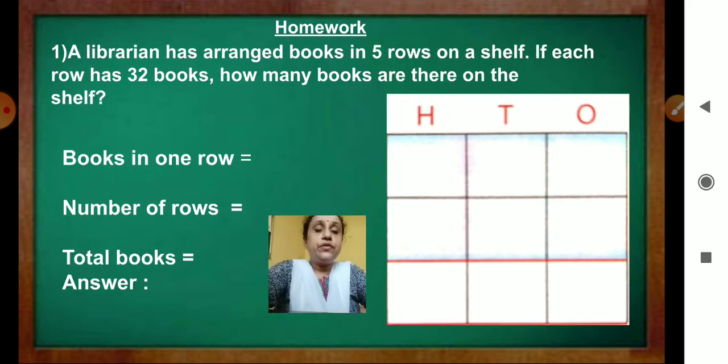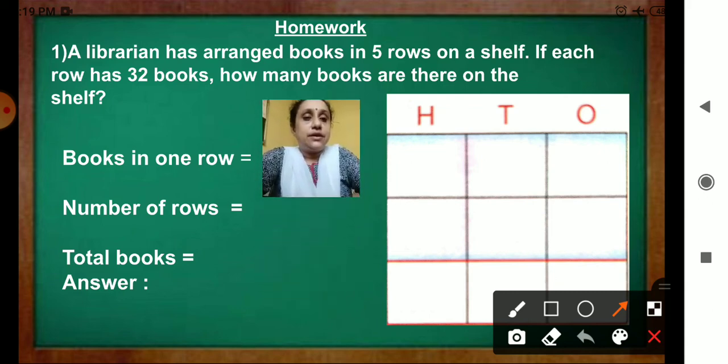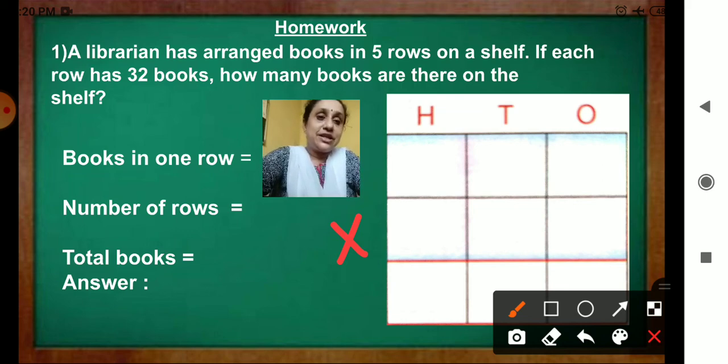Now, your homework. Question 1. A librarian has arranged books in 5 rows on a shelf. Each row has 32 books. How many books are there on the shelf? Now, you have understood how you will write the numbers. Now, books in 1 row. So, number of rows. You will write. And then multiply. Give here multiplication sign. Don't forget. And get the correct product.